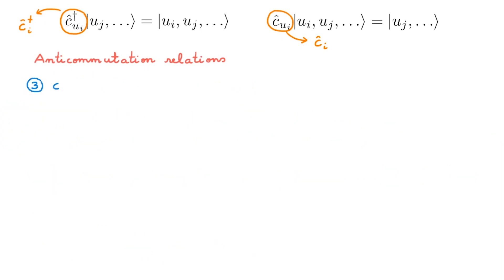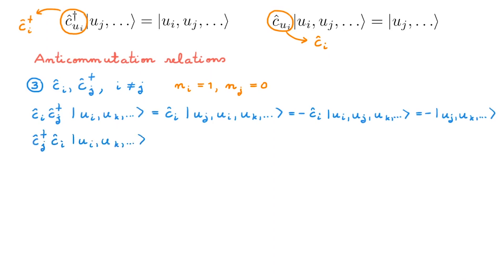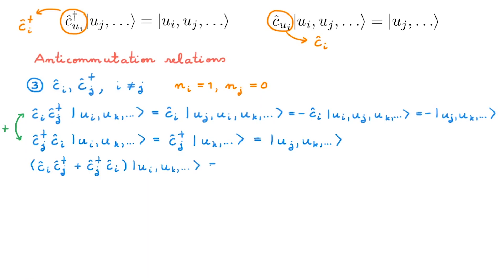What about the anticommutator between an annihilation and a creation operator? For i different from j, this combination of operators gives a non-zero result only if the state has one particle in state i and no particle in state j (ni = 1, nj = 0). Acting with c_i c†_j first creates a particle in state j, then we exchange the first two particles to put state i first, getting an overall minus sign, and then annihilate the particle in state i. Reversing the order, we first annihilate the particle in state i and then create one in state j. Adding the two equations gives the anticommutator {c_i, c†_j} = 0 for i ≠ j.